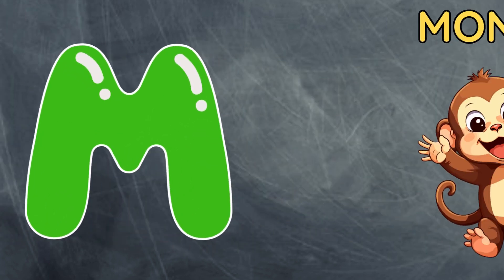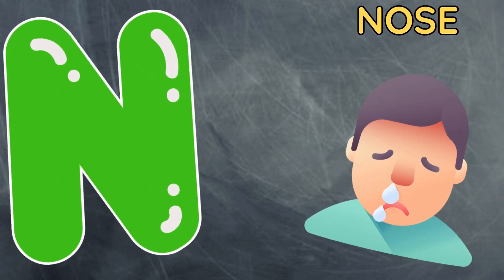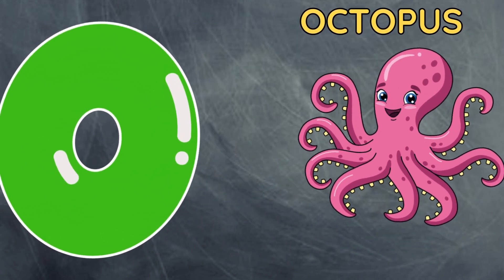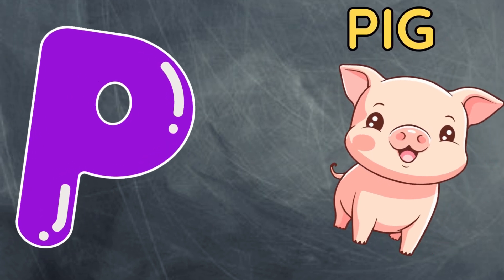M is for monkey, m-m-monkey. N is for nose, n-n-nose. O is for octopus, o-o-octopus. P is for pig, p-p-pig.